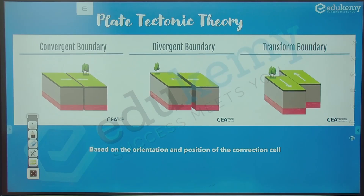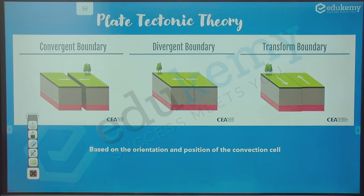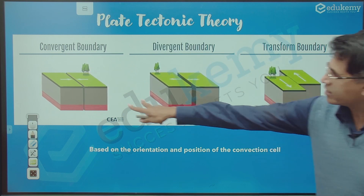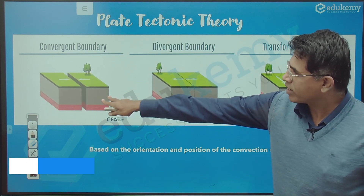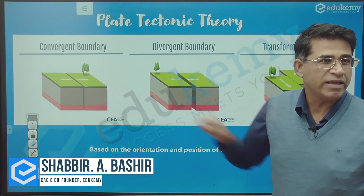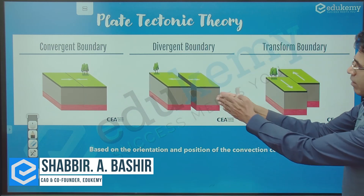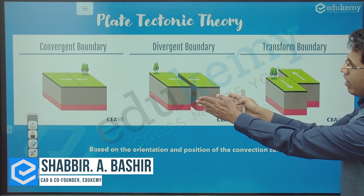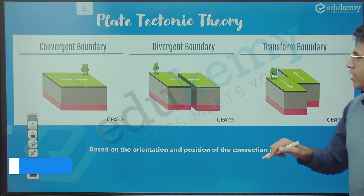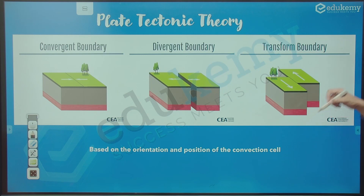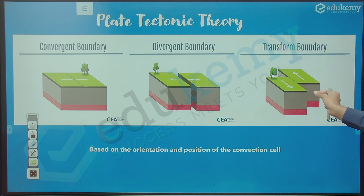These are the boundaries. In a convergent boundary, the plates are moving towards one another. In a divergent boundary, the plates move away from one another. In a transform boundary, the plates are slipping past — they are not colliding, not moving away, they are slipping past.